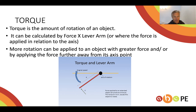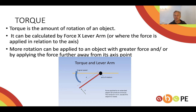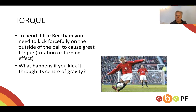Torque is a fancy word. It simply means how much rotation an object has, and can be calculated by force — that is, the amount of force you apply to the object — times the lever arm, or where you apply that force. If you apply the force further away from the center of gravity, you're going to get a greater turning effect.